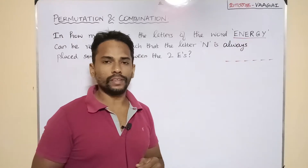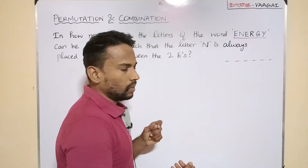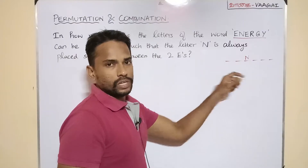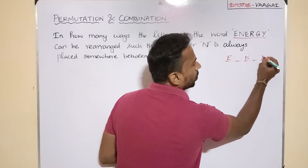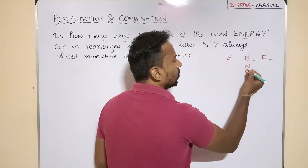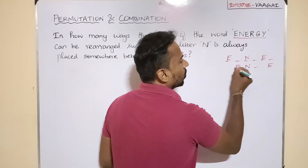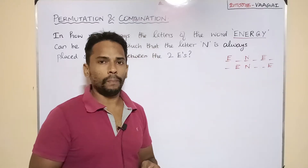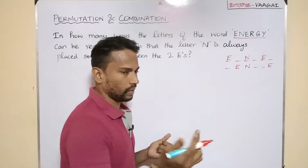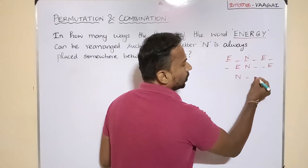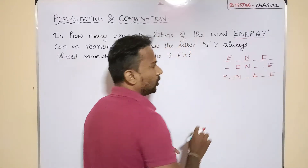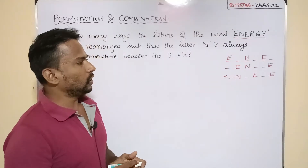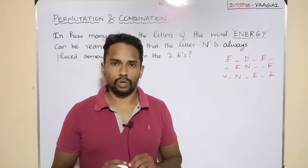It doesn't have to be consecutive — N can be placed between the two E's even with some gaps. So the two E's can take any two positions as long as N lies between them. The key point is: N should never be outside the two E's. For example, if N is here but the two E's are both to one side of it, that kind of arrangement is not allowed.